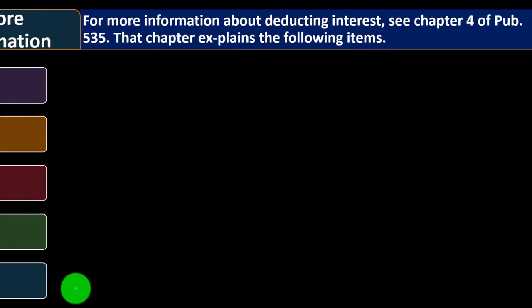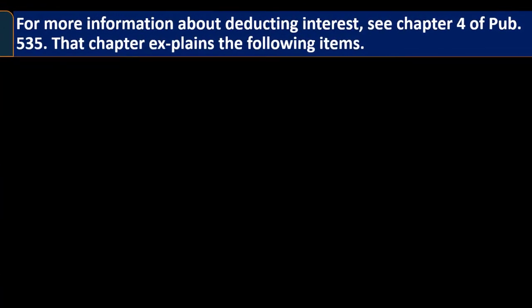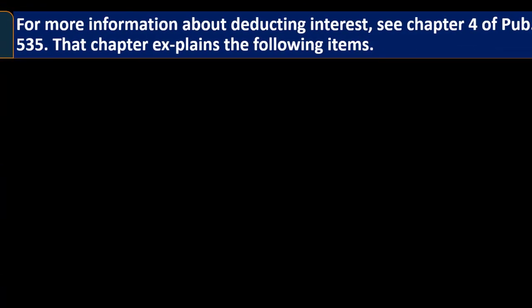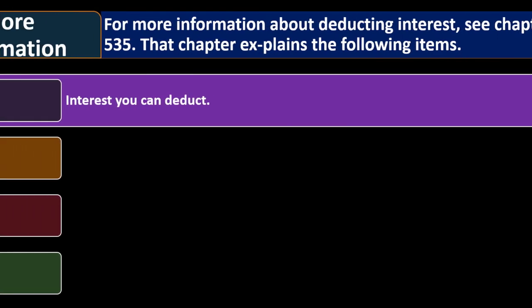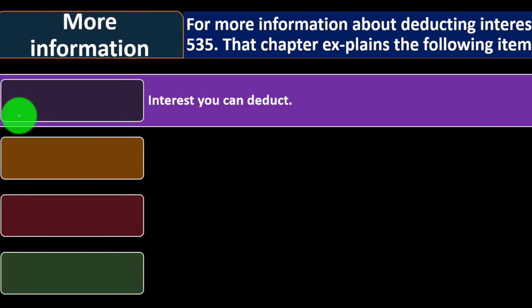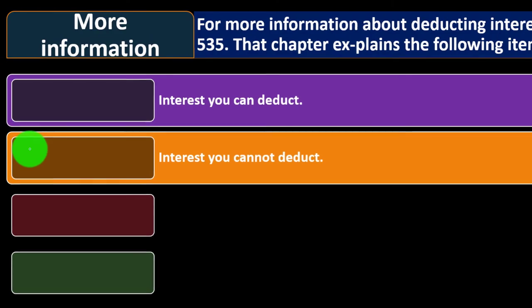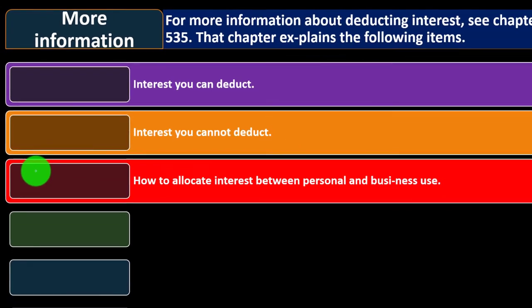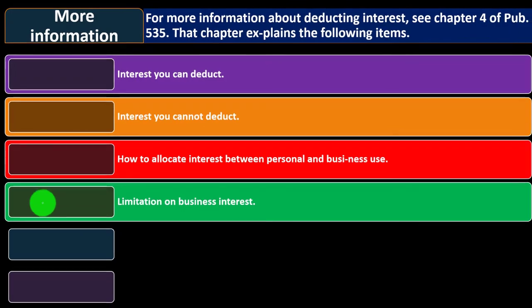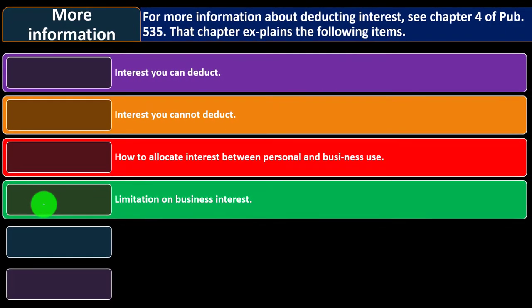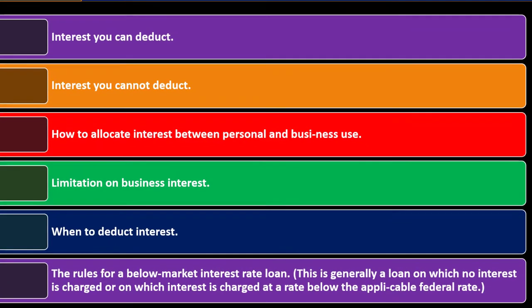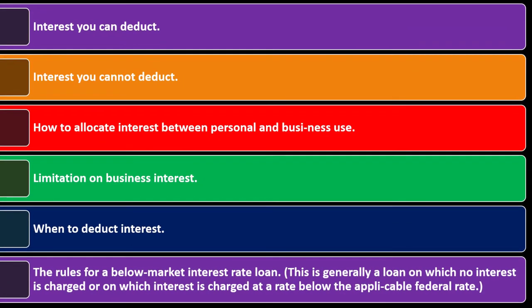For more information about deducting interest, see Chapter 4 of Publication 535. That chapter covers: interest you can deduct; interest you cannot deduct; how to allocate interest between personal and business use; limitations on business interest; when to deduct interest; and the rules for below-market interest rate loans.